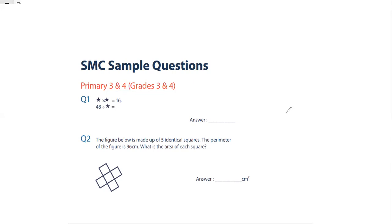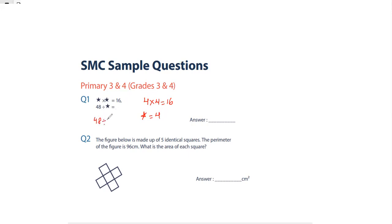Let's start. Star times star gives you 16, so what does 48 divided by star equal? We know 4 times 4 gives 16, so the value of the star is 4.